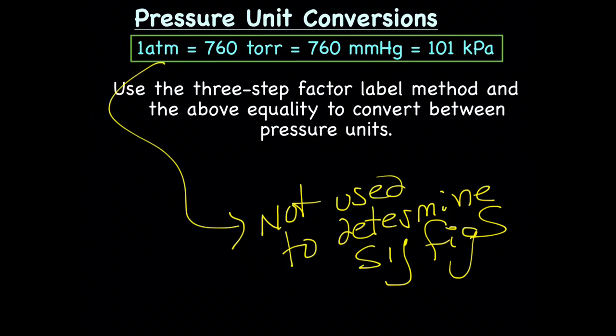So what we're going to learn how to do today is if we get a problem where we have one unit in millimeters mercury and the other pressure unit in kPa, we need to convert between those units to get them the same. To do that, you use the three-step factor label method and one of the equalities from above to convert between pressure units.